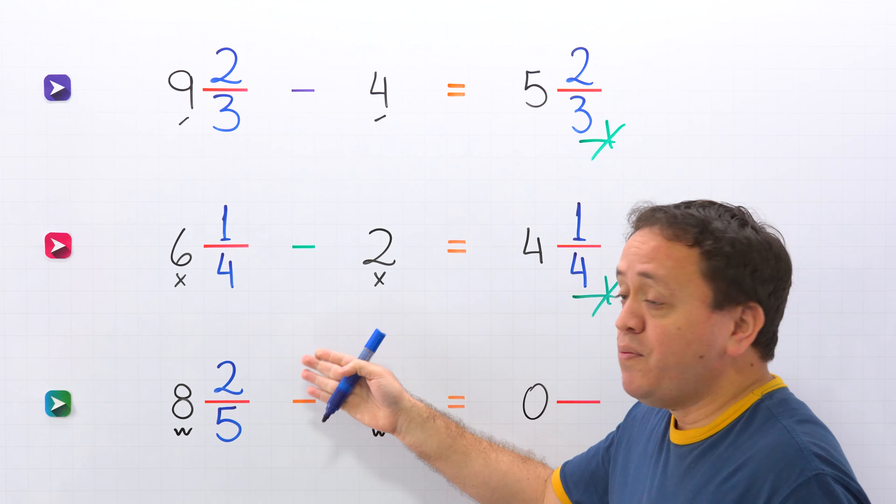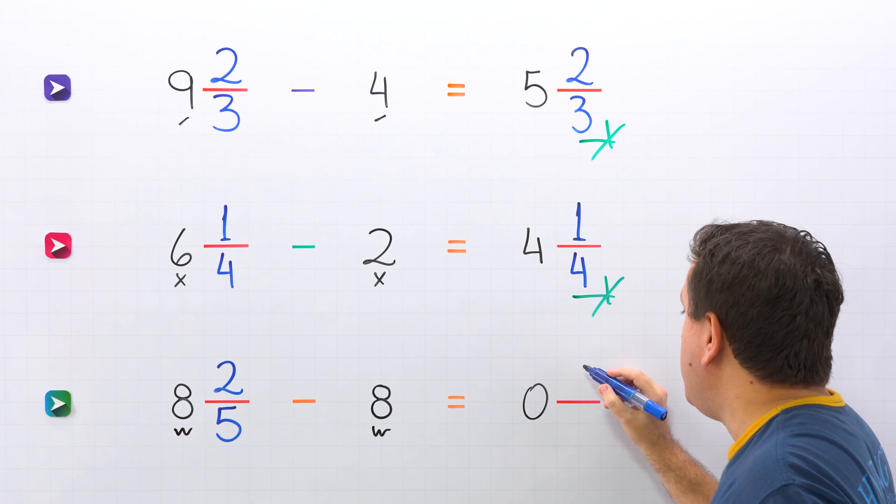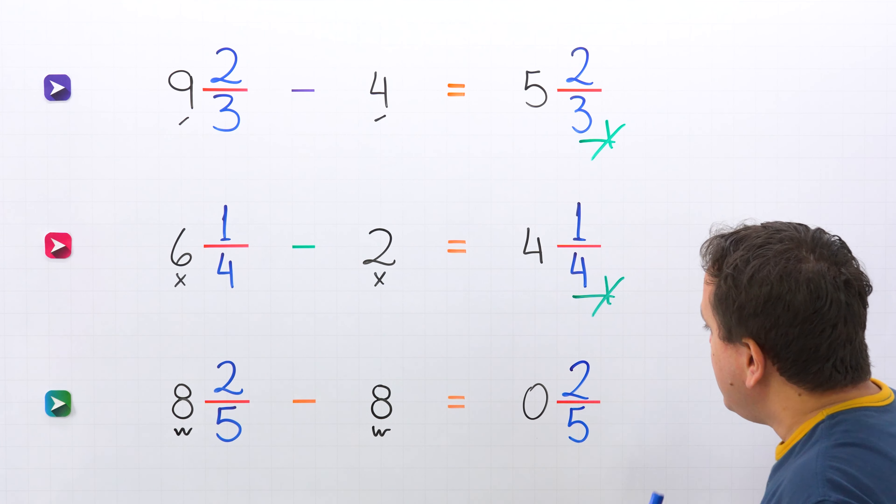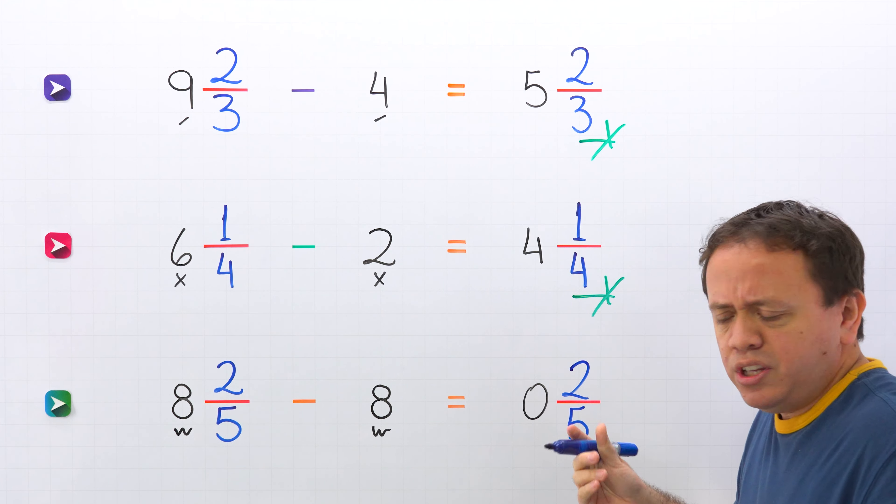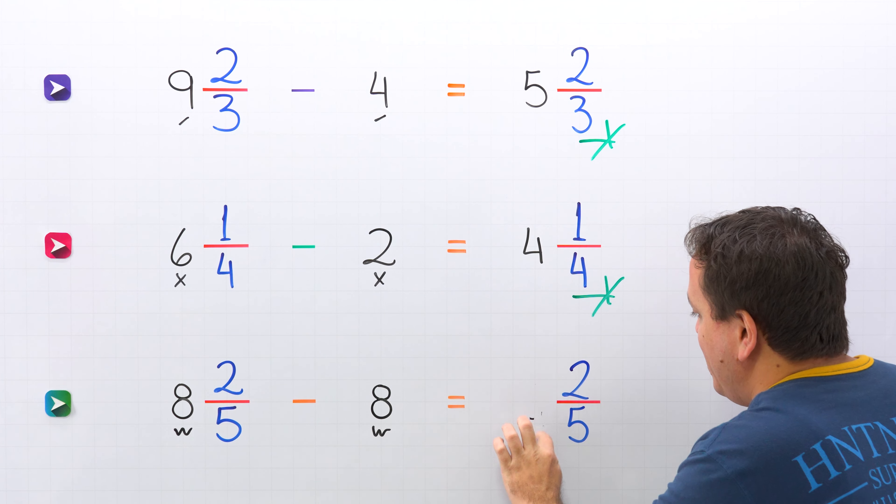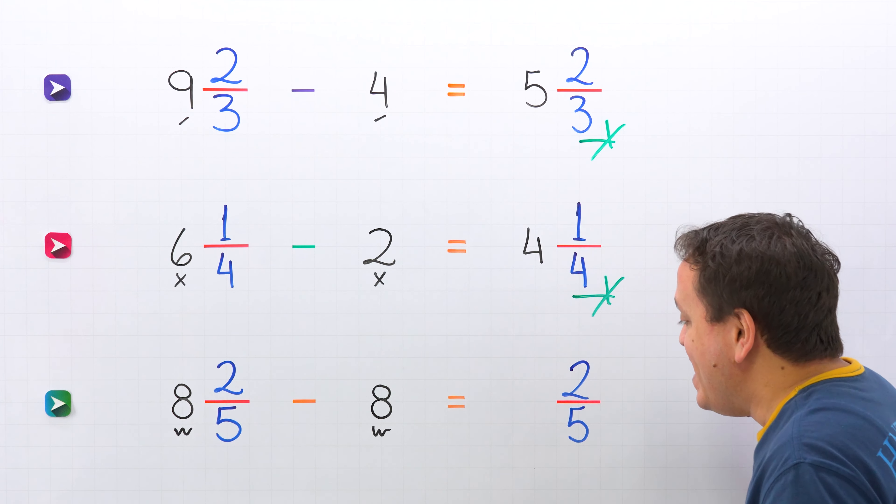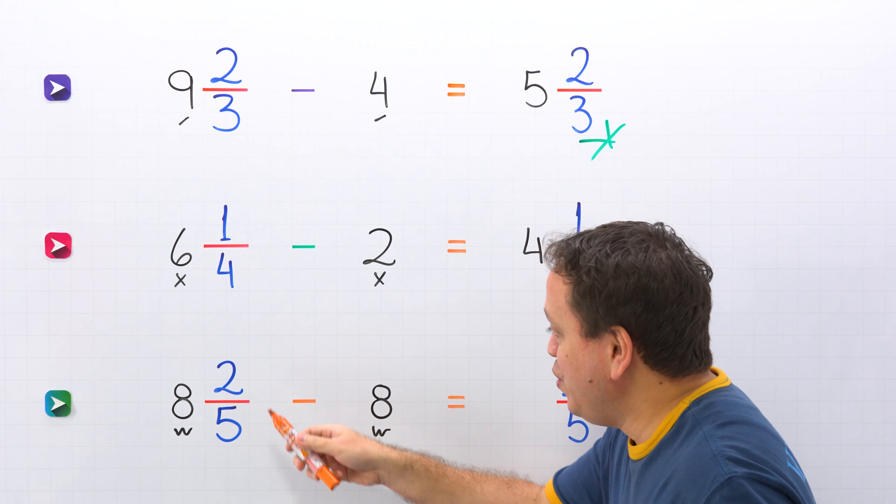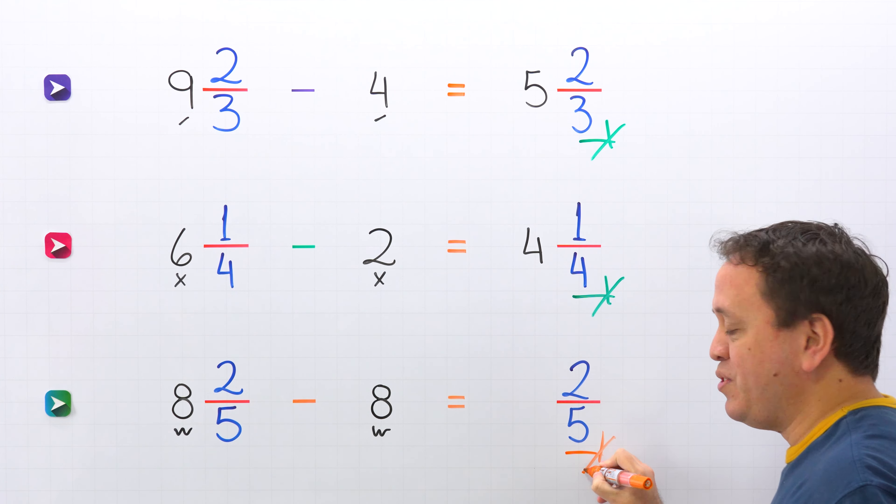And then we copy the fraction of the mixed number. Two fifths. But there is something else. There is no need to write this zero. It's just zero. So we can erase this number. In that way eight and two fifths minus eight gives us two fifths.